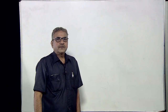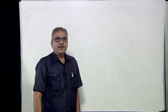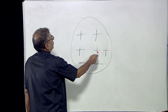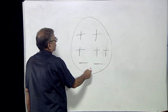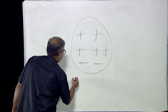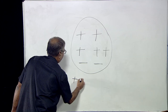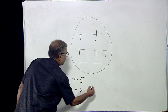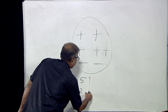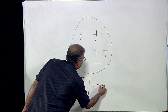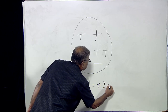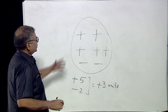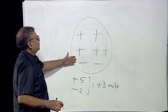Let us demonstrate positive and negative charge bodies through figures. This body has five units of positive charge and two units of negative charge: positive charge +5 and negative charge −2. So the net charge, if we add them up, is plus three units. This is an example of a positively charged body.